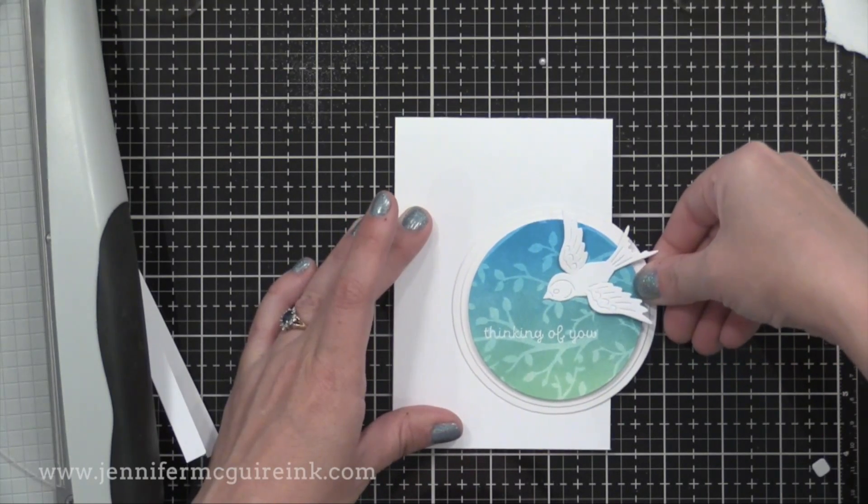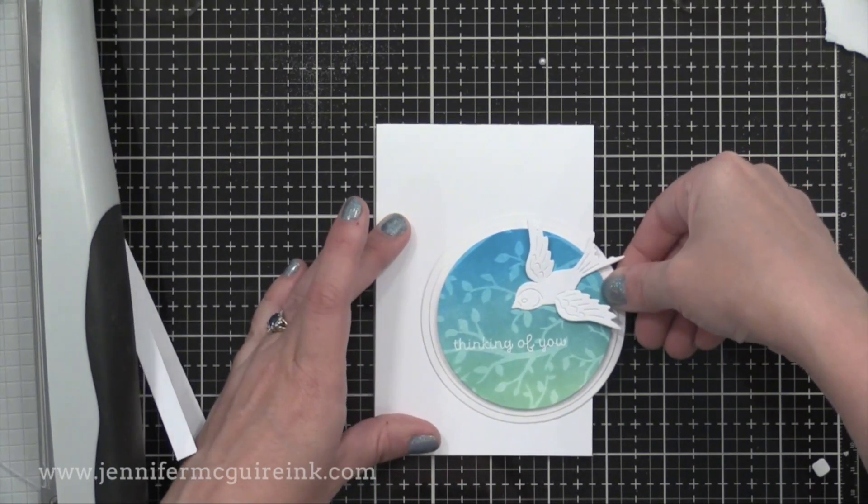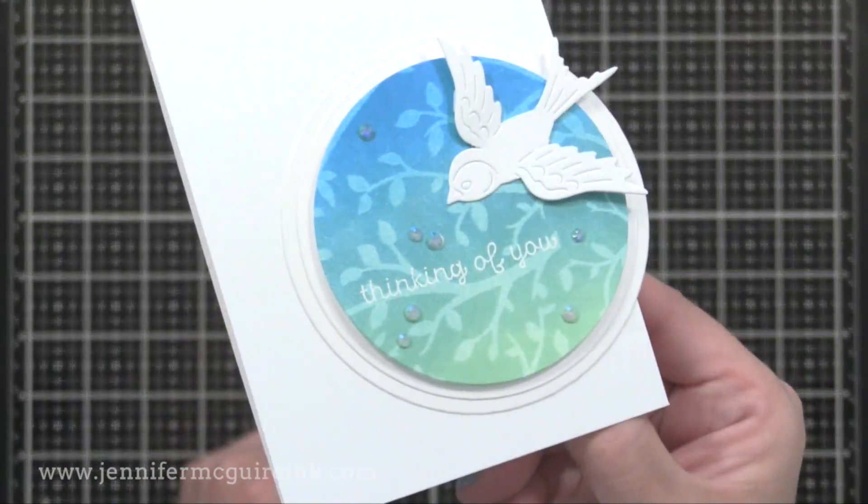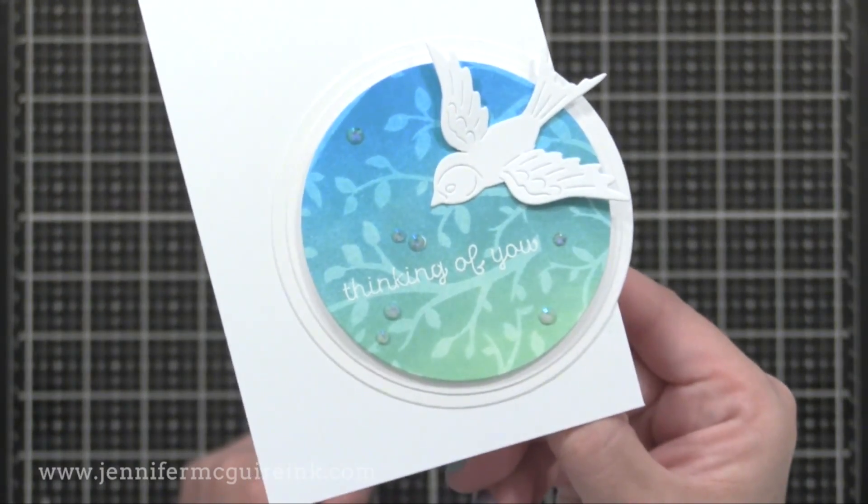Now my card I trimmed down. This card is only 3 1⁄2 wide by 5 1⁄2 tall. That way I can have my circle hanging off the side, but it'll still fit in an envelope.